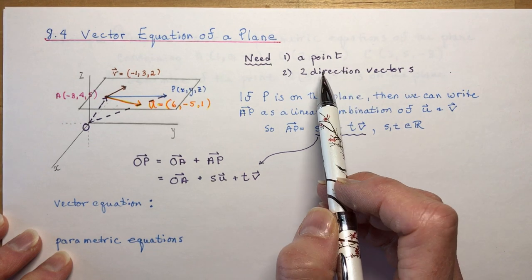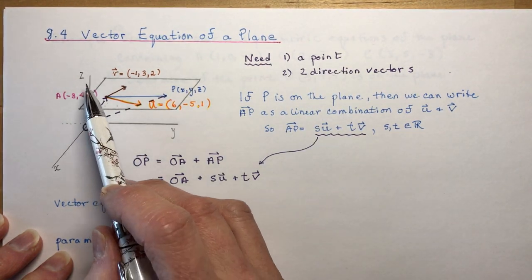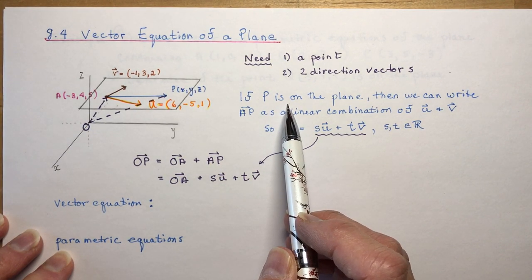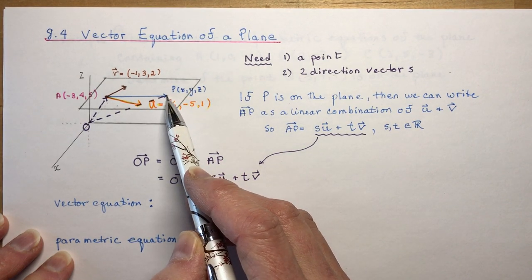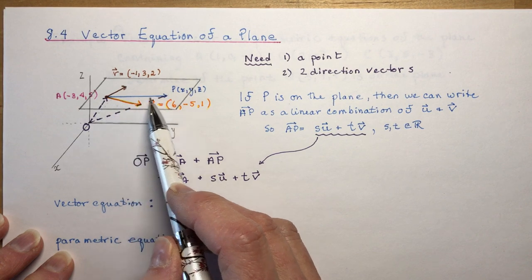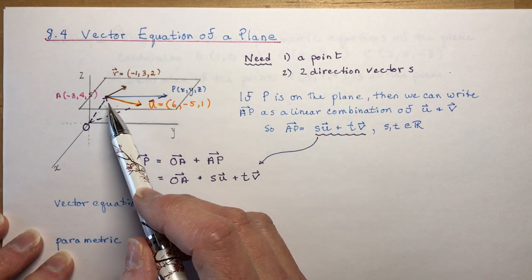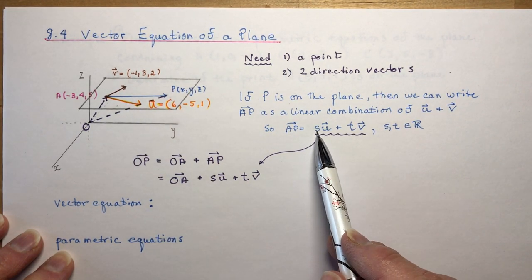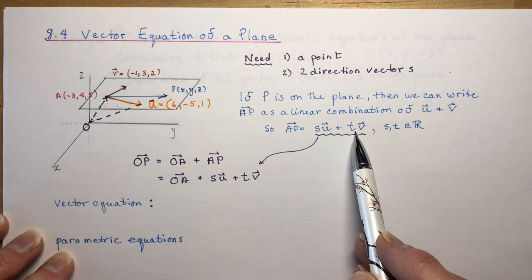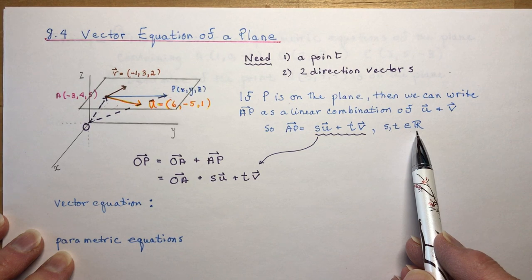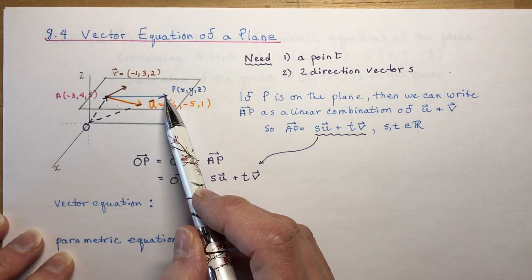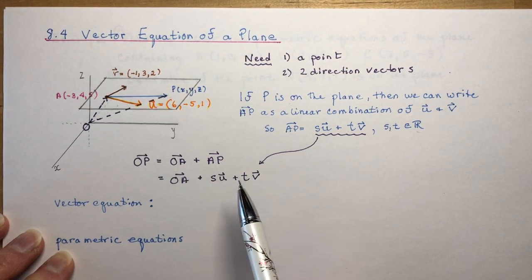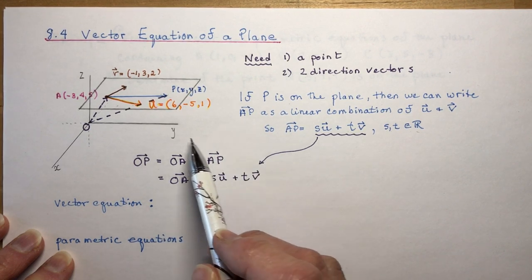When we want to define a plane, we need a point and two direction vectors. Looking at this schematic, if P is on the plane, then we can write AP - from A to P - as a linear combination of the two direction vectors U and V. So AP equals S times vector U plus T times vector V, where S and T are elements of real numbers. Then O to P equals OA plus AP, giving us our equation.